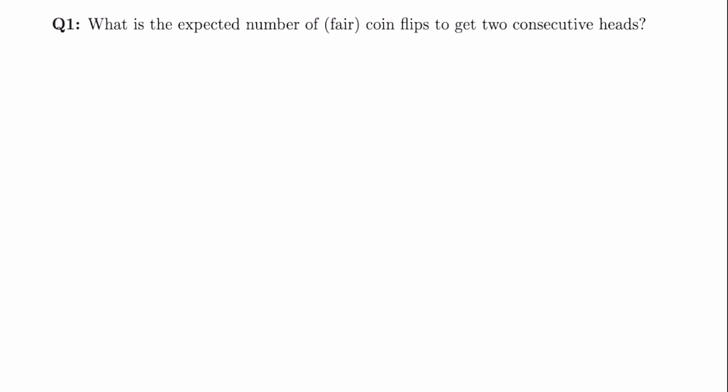So how do we solve this problem? Well, if you go back to my first video, I actually define a trick that we're going to use right here. Let's define X to be the expected number of coin flips to get two consecutive heads. And let's think about what the first two flips could be. The first two flips could either be heads-heads, heads-tails, tails-heads, or tails-tails. Let's look at each of these examples separately.